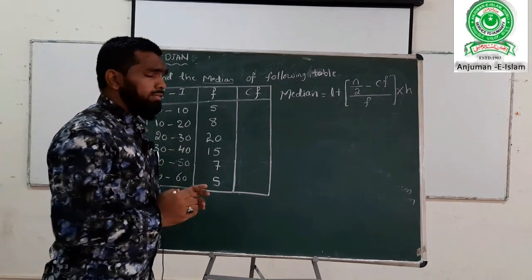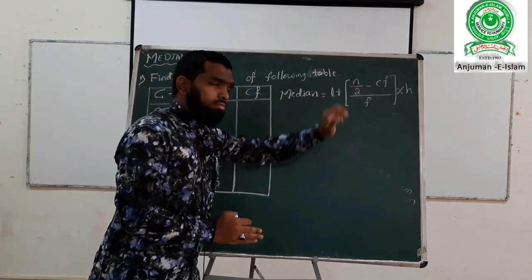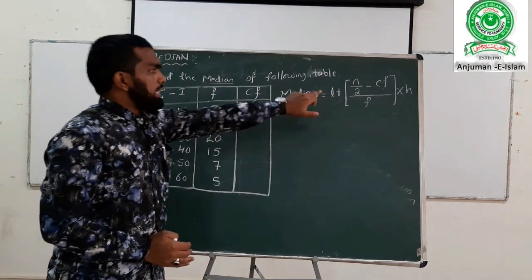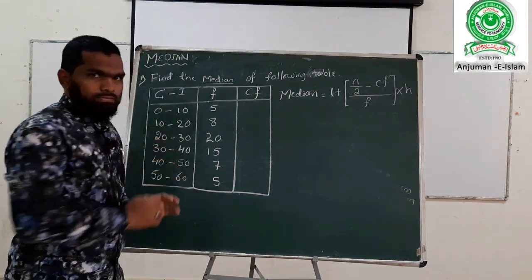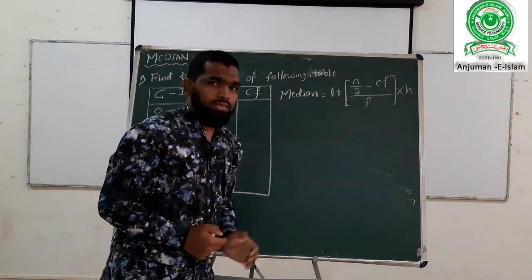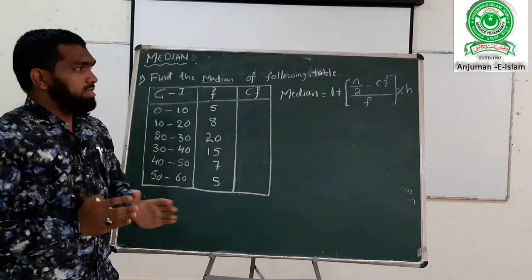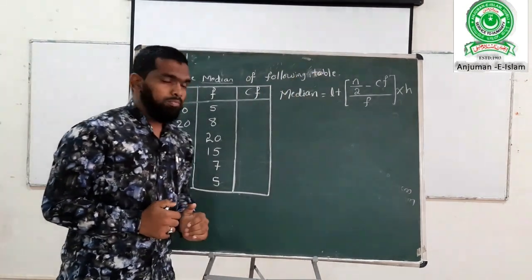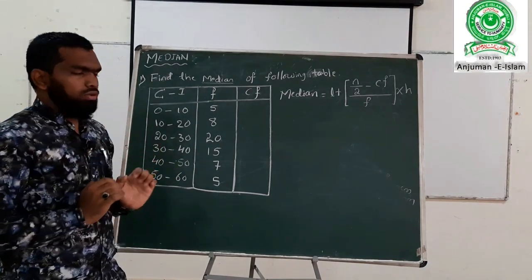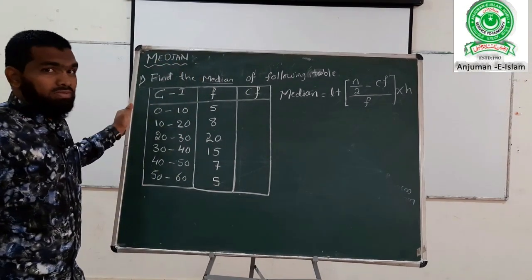Now, we need to identify the values. What is L? What is N divided by 2? What is CF? What is F? L is the lower limit of the class. CF is cumulative frequency. F is frequency. H is the class difference.